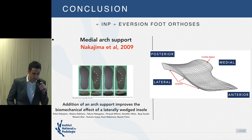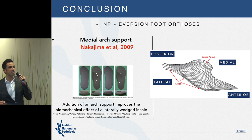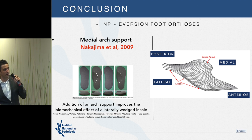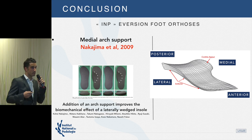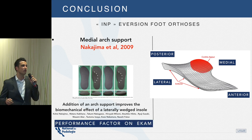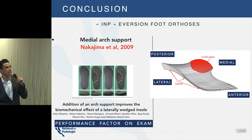The third characteristic — and perhaps the most interesting — is the medial arch support. While it might seem counterintuitive for medial compartment pathology, some studies show that when combined with a lateral wedge, medial arch support improves the reduction of the EKAM. This may be due to better bearing surface and comfort.